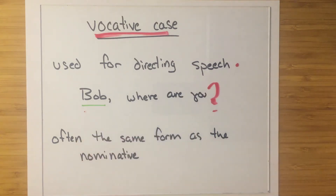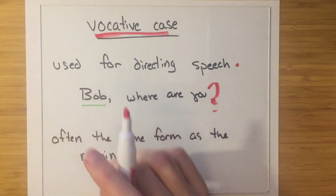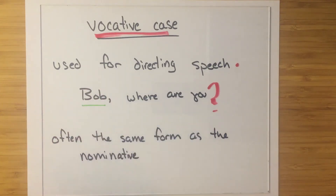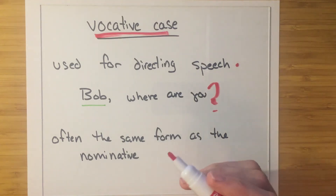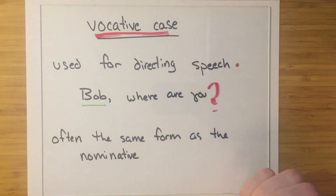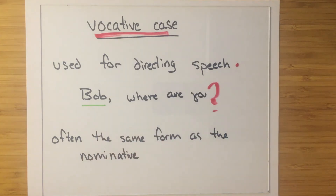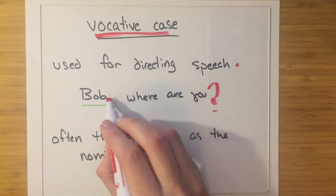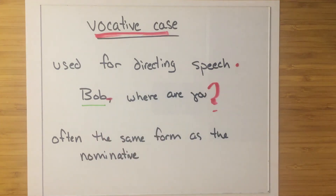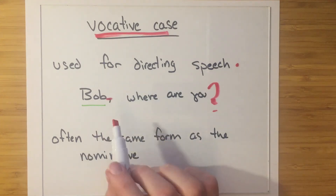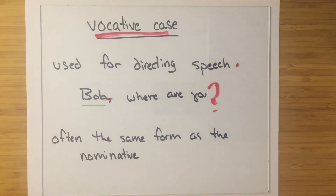Bob would be in the vocative case because the word 'Bob' is being used specifically to speak towards Bob. It's not saying that something is for him — it's just used to speak or address him. A lot of languages will have a specific ending that gets tacked on if you're using something as an address form, and that ending is not tacked on in other cases.